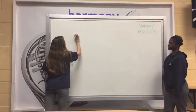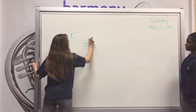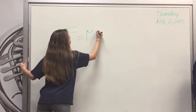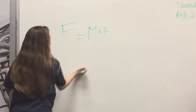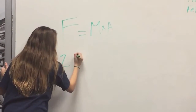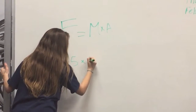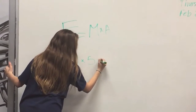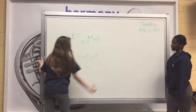If force equals mass times acceleration, then 2.5 times 5 equals the force.